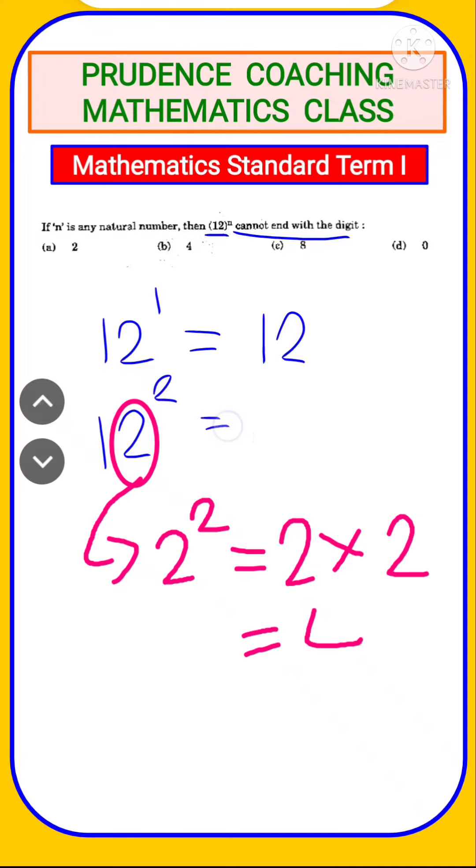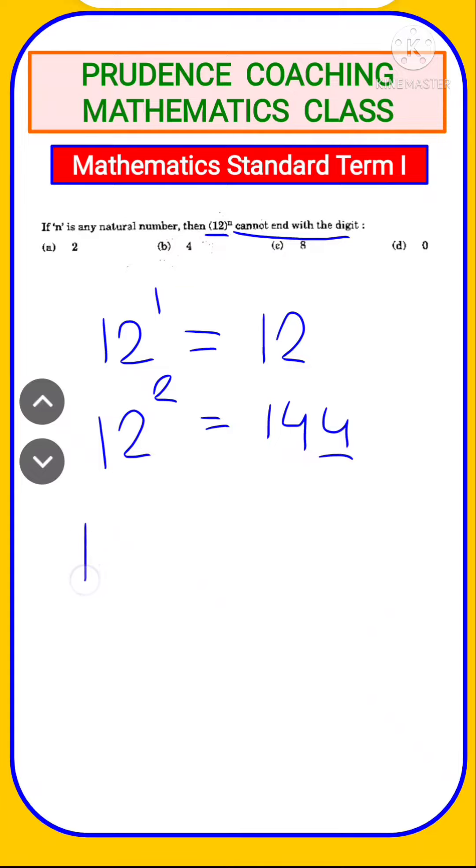Now 12 to the power square we know is 144. So here we are getting the unit digit as 4. So 4 is also not the answer.